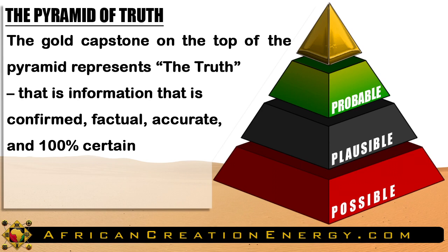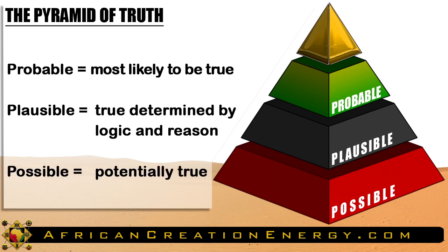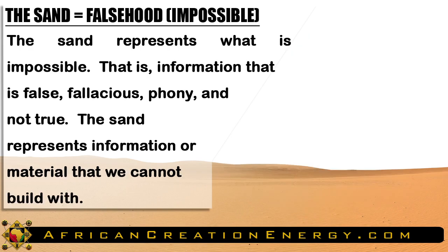So this is the pyramid of truth. The gold capstone on the top of the pyramid represents the truth — information that is confirmed, factual, accurate, and 100% certain. Ideally, this is what we want to obtain. On our way to the truth at the top of the pyramid, we have to pass through three layers in respective order of possible, plausible, and probable. Before we discuss the first three layers, we have to discuss what the sand represents.